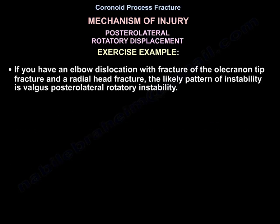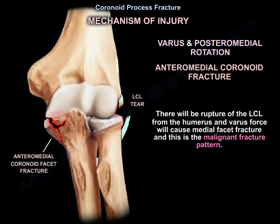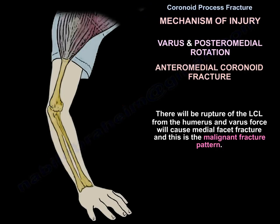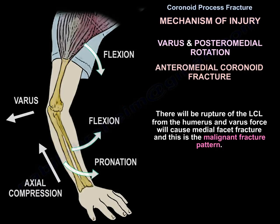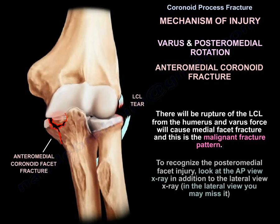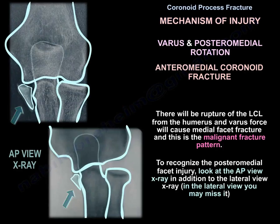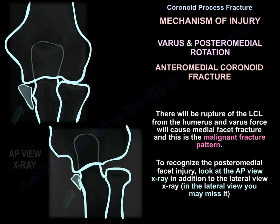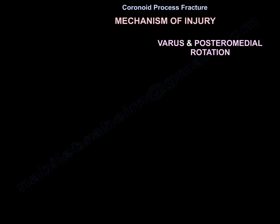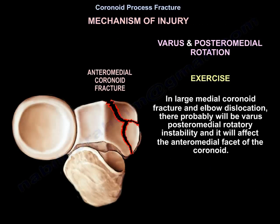If you have an elbow dislocation, olecranon tip fracture, and radial head fracture, the likely pattern of instability is valgus posterolateral rotatory instability. In anterior medial coronoid fractures, varus and posteromedial rotation with ruptured LCL from the humerus causes a varus force leading to medial facet fracture — this is the malignant fracture pattern. To recognize the posteromedial facet injury, look at the AP x-ray in addition to the lateral x-ray, as you may miss it on the lateral alone.